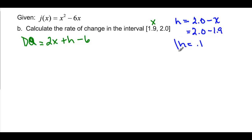So now I know what h is, and I know what x is, and I know what my difference quotient is. So let's plug and chug. 2 times my x, which is 1.9, plus my h, which is 0.1, and then minus 6. When I multiply all that out and add it all together, I get negative 2.1. So the average rate of change basically between these x's would be negative 2.1.